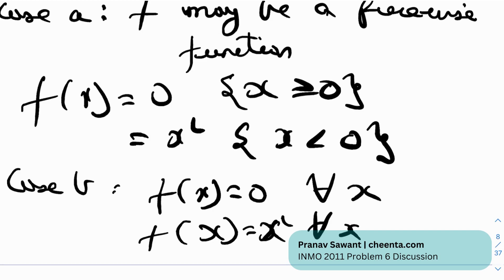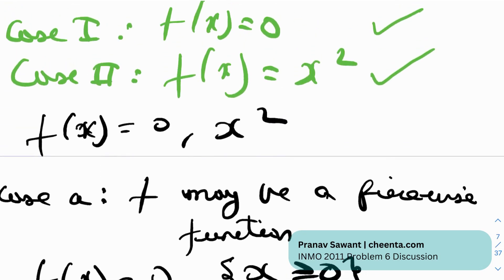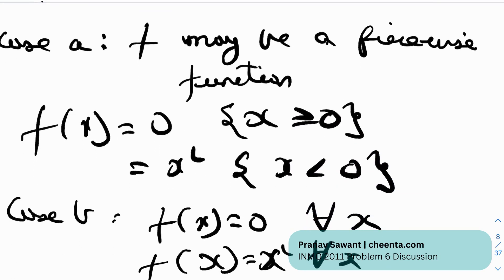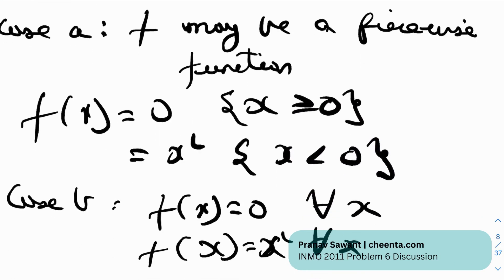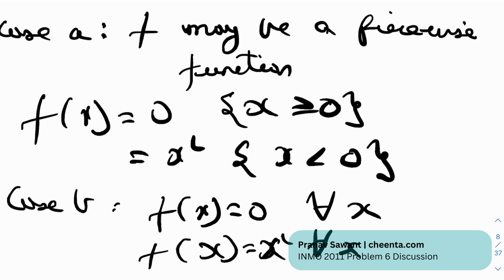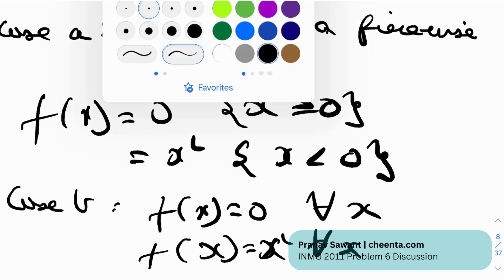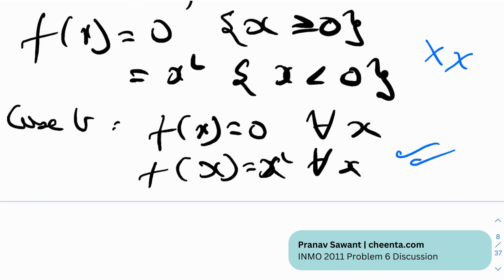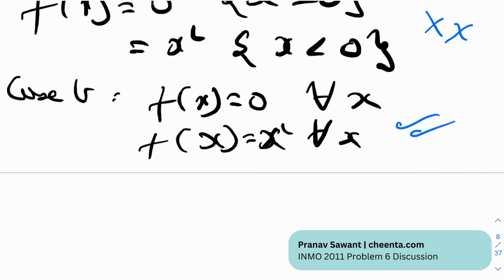So there are two scenarios: either f is piecewise, or it is globally one of the two solutions. If I had stopped the solution at this point, marks definitely would have been deducted in a subjective exam, because f may be piecewise. This is exactly what is called the pointwise trap. We need to prove that f is not piecewise.